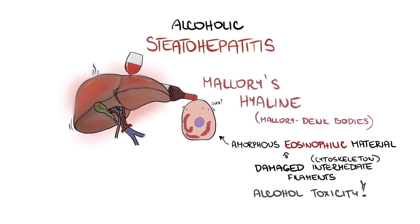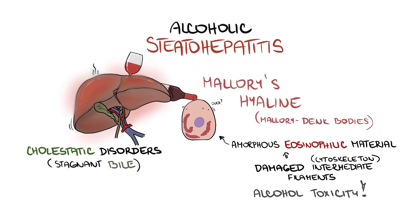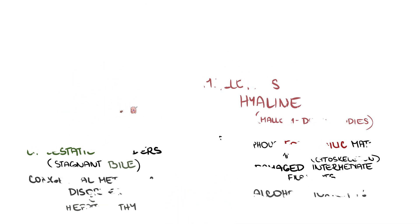Apart from alcoholic steatohepatitis, these bodies often appear in cholestatic disorders, since the stagnant bile has a toxic effect on the hepatocytes as well. Finally, we need to stress that many congenital metabolic disorders may also manifest as hepatopathy and storage of pathological material, including fat, as a common feature. However, this topic goes beyond the scope of this video.